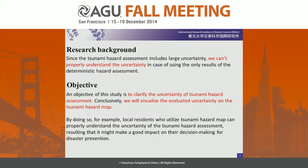This is the research background and objective of this study. Since tsunami hazard assessment includes large uncertainty, we cannot properly understand the uncertainty when using only the results of deterministic hazard assessment. Based on this background, the objective of this study is to clarify the uncertainty of tsunami hazard assessment. By doing so, local residents who utilize tsunami hazard maps can properly understand the uncertainty of the tsunami hazard assessment, which might make a good impact on their decision-making for disaster prevention.